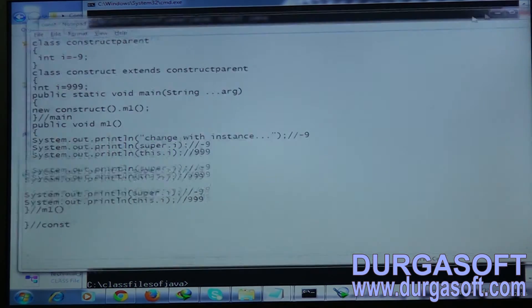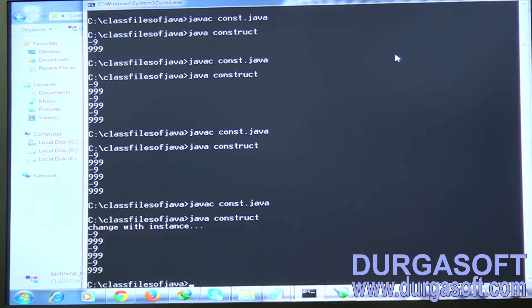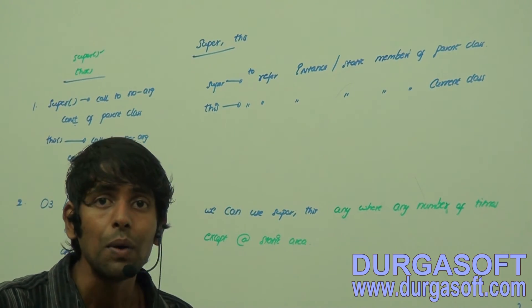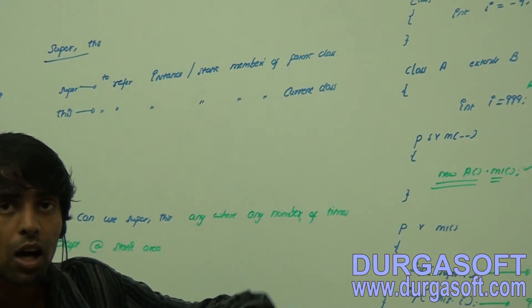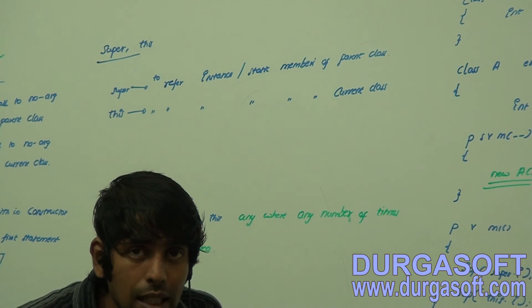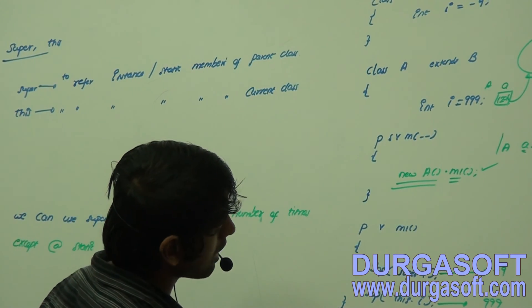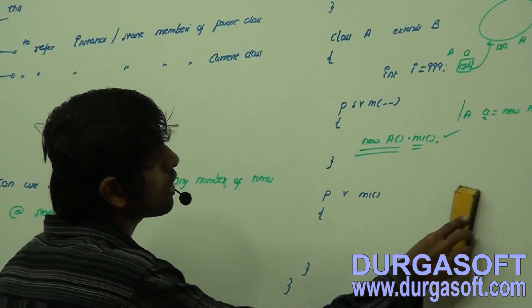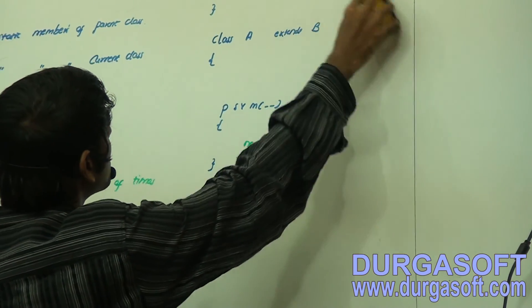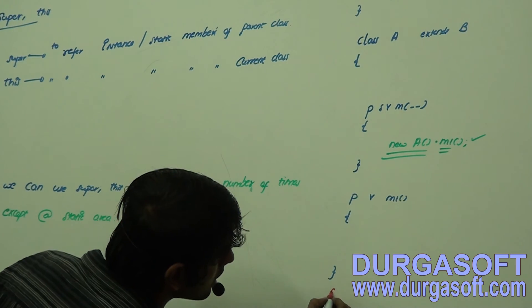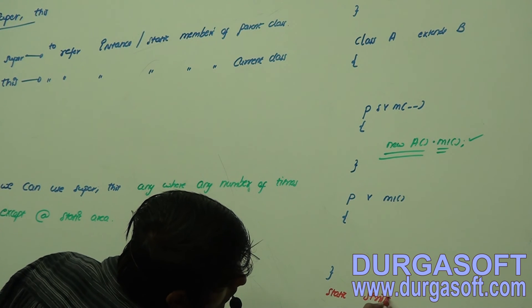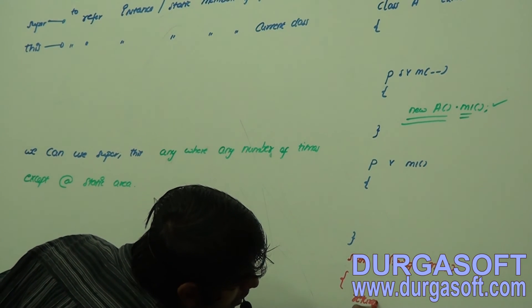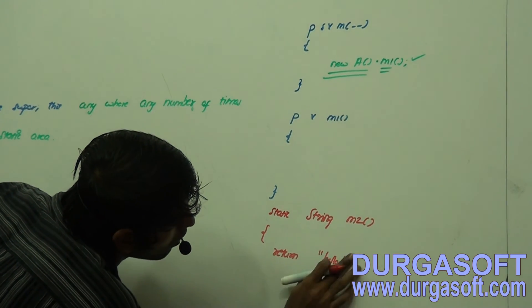This covers the full difference: super() calls the no-argument constructor of the parent class, this() calls the no-argument constructor of the current class, and super and this are keywords referring to instance and static members of the parent class and current class respectively. Now let's see how to refer to static and instance services — same piece of code, but I'll add a static method in class A: static String m2() { return 'hello'; }.